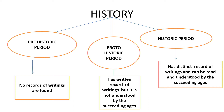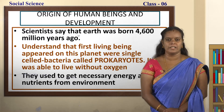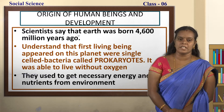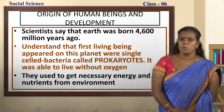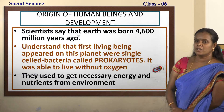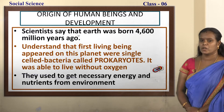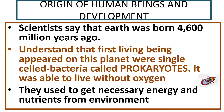We will see the origin of human beings and development — how human beings evolved on the earth. Scientists say that the earth was born more than 4,600 million years ago. The first living beings that appeared on this planet were single-celled bacteria called prokaryotes. Look at the screen — you can see the picture of prokaryotes. These prokaryotes were able to live without oxygen.